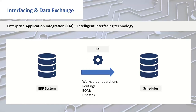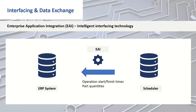Most customers bring works orders and operations through from their ERP, though some bring only demand — works orders, quantities, and due dates — and hold detailed scheduling information in the scheduler itself. We can also send data back from the scheduler. One example is the planned start time on the first operation of a works order — that becomes the required material delivery date that the ERP system can use. Similarly, the ERP can send an earliest start date to the scheduler when material will actually be delivered. We can also send actual start and finish times and quantities booked, using our shop floor data collection.